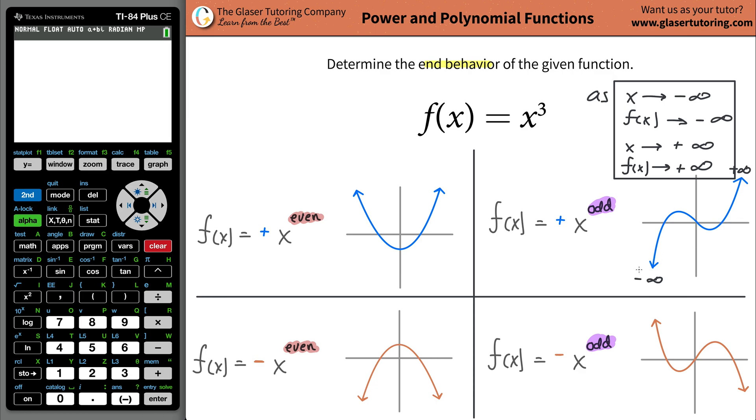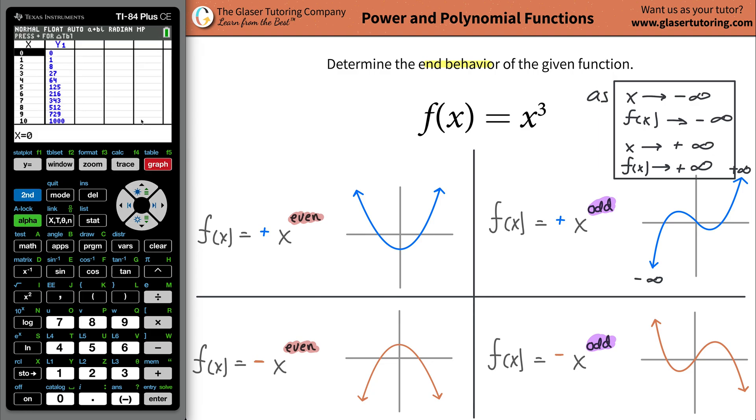And you can also use the calculator if you want. You can go to y equals. You can plug in the value of your function, x cubed. So raise it to the third, then hit graph. And you see how we have the general shape? See how it's going down to negative infinity here? And then it's going up to positive infinity. You can also go to your table. You can hit second table or second graph.